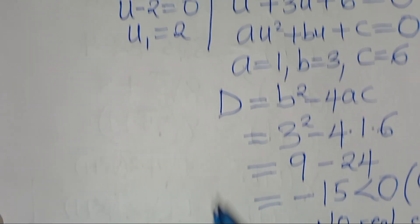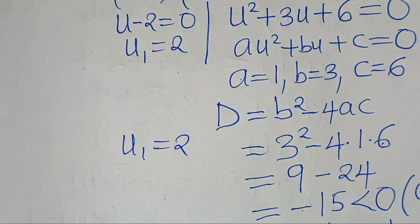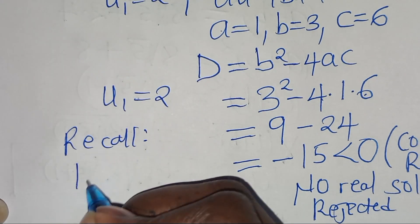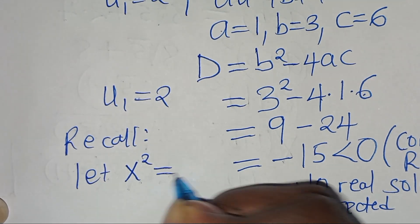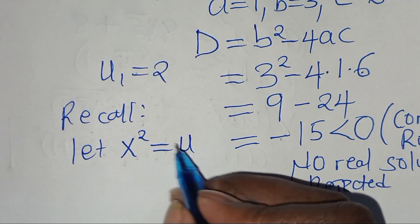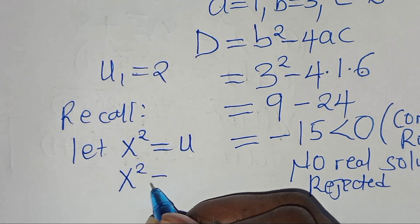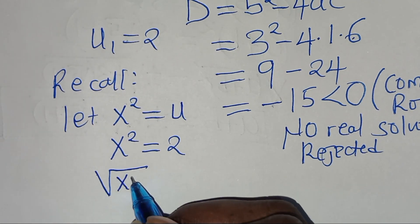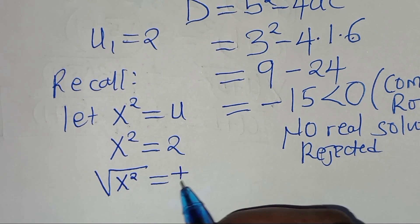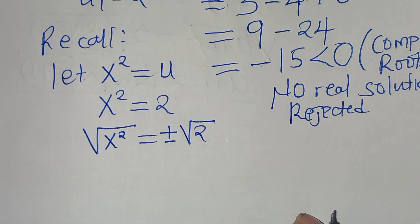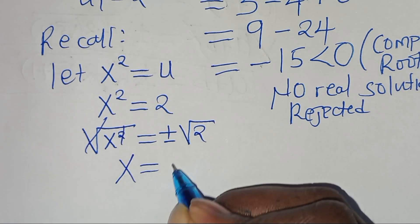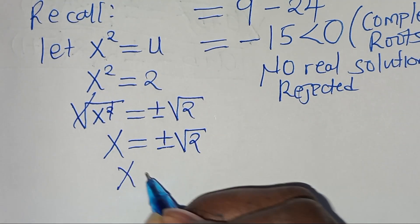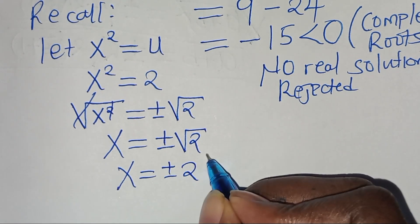So let's focus on u1 which is equal to 2. Recalling that x to the power of 2 was set equal to u, substituting u with 2, we have x to the power of 2 equals 2. To solve for x, we introduce a square root on both sides, so that x is equal to plus or minus the square root of 2, or in other words, plus or minus 2 raised to the power of one half.